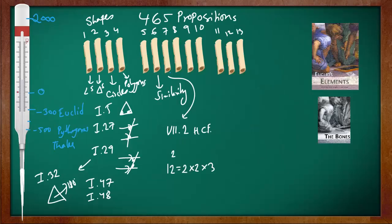If you want to buy the book, one good print is by Greenland Press — it's called Euclid's Elements. They don't have any explanation, just the propositions in a straightforward translation. There is also another small pocket book called The Bones — it doesn't have any proofs, just the names of the propositions, as a quick reference.